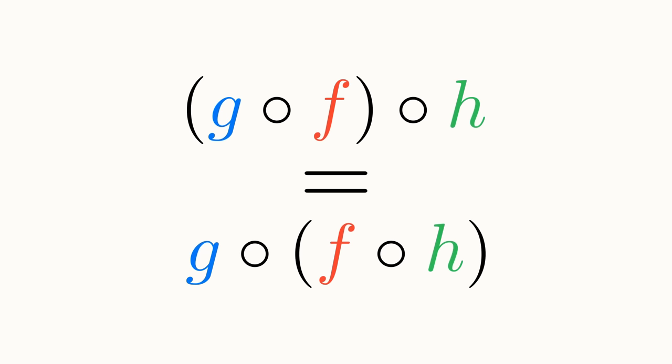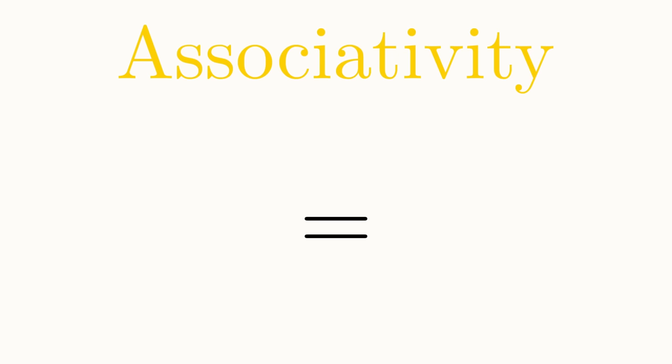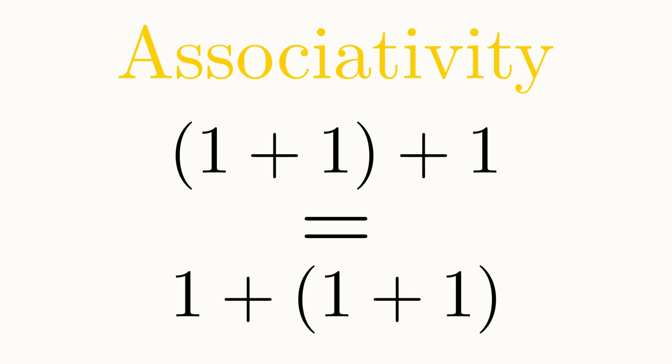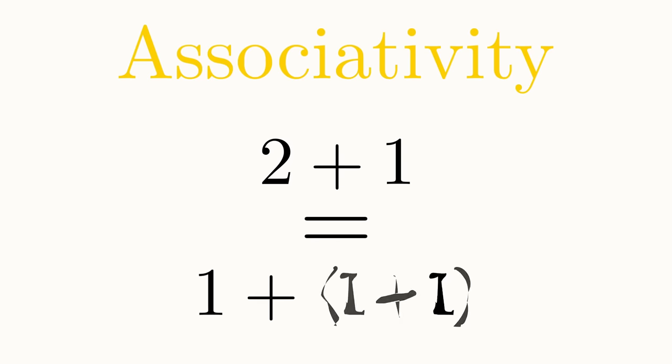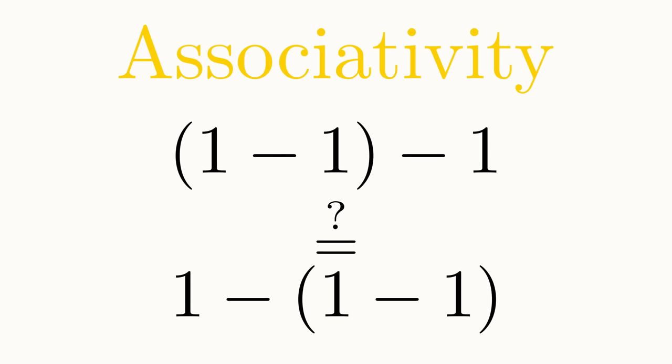To ensure that composition behaves in a similar fashion to functional composition in set theory, we'll make it a requirement that if we compose an arrow with an already composed arrow, we must be able to compose them in any order we like and still get the same arrow at the end. We say that composition of arrows must be associative. As an example, addition is associative, since adding one and one, then adding one to the result, gives the same answer as adding one onto one plus one. Why not try something similar with subtraction and see whether subtraction is an associative operation?